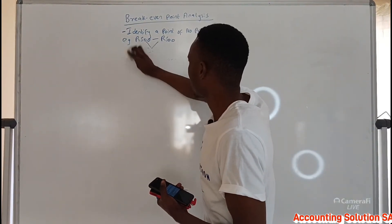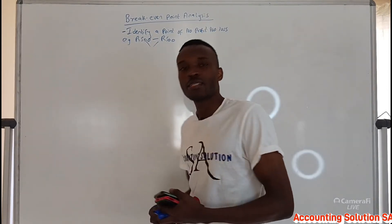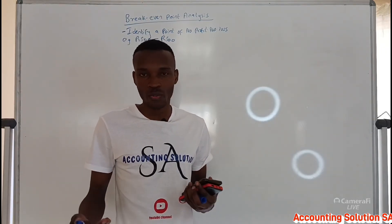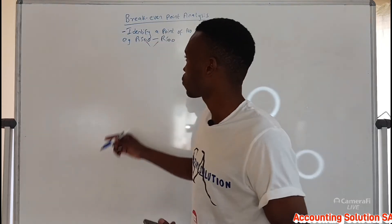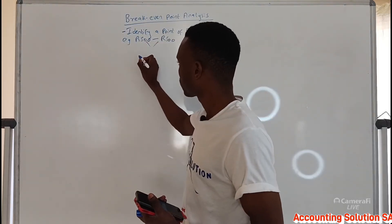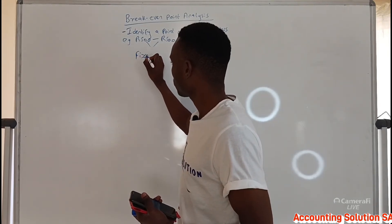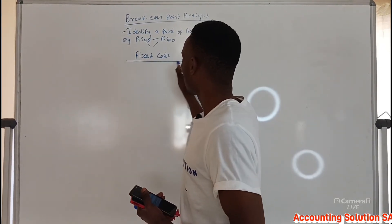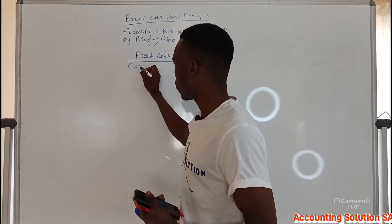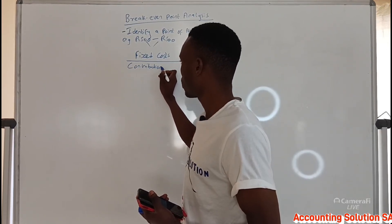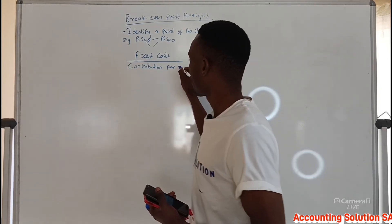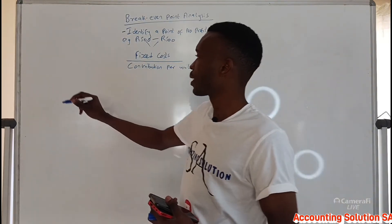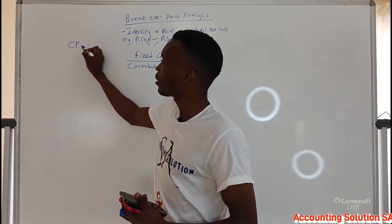How do we calculate a break-even point? To calculate it, you use this formula: Fixed Cost divided by Contribution per Unit. Contribution per unit is the same as selling price per unit minus variable cost per unit.